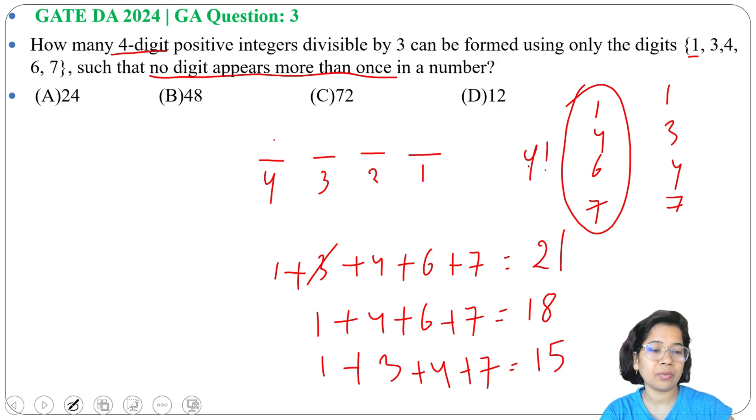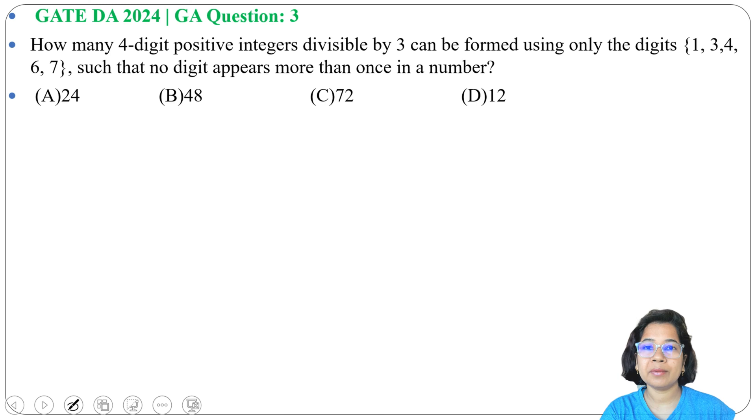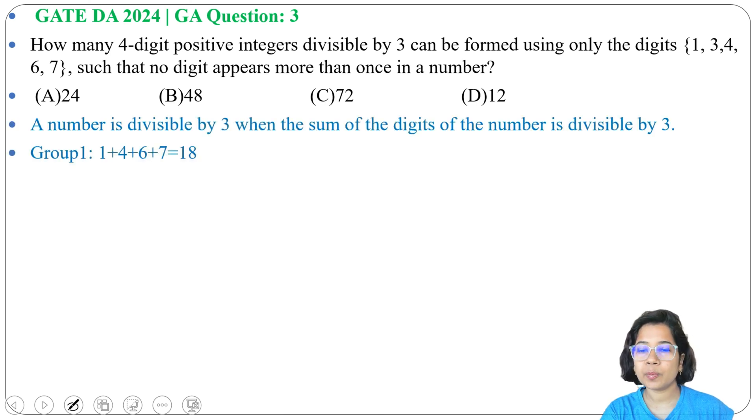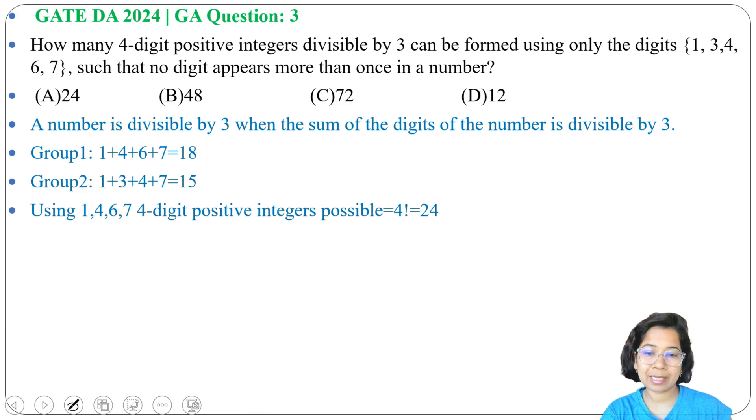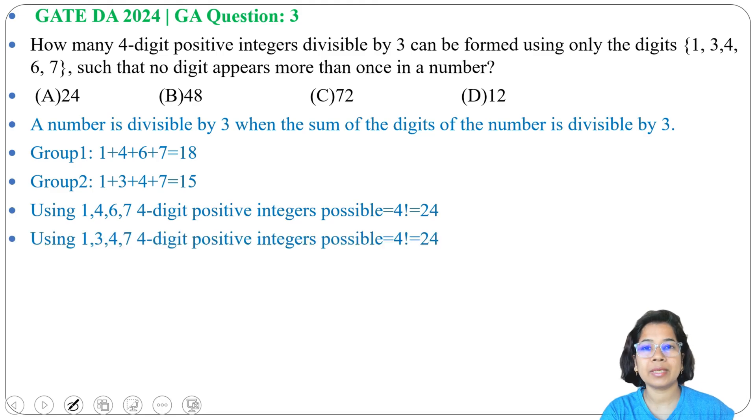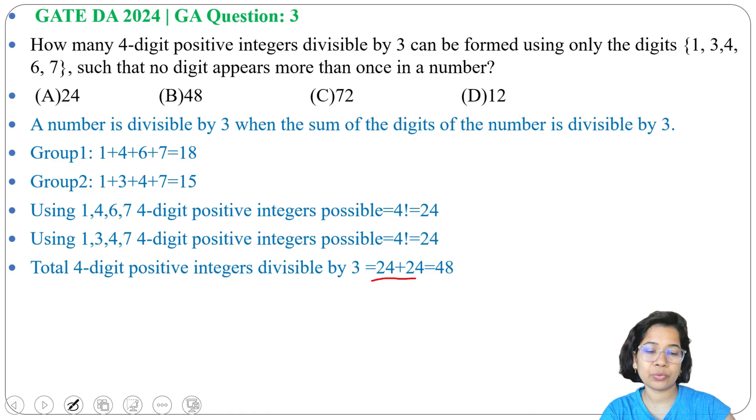By using 1, 4, 6, 7, in the same way by using 1, 3, 4, 7, 4 factorial ways. So total will be 4 factorial plus 4 factorial. A number is divisible by 3 if their individual digit sum is divisible by 3. There can be 2 groups possible: one is 1, 4, 6, 7, another is 1, 3, 4, 7. Using 1, 4, 6, 7, 4-digit positive numbers possible equals 4 factorial, and using 1, 3, 4, 7, 4-digit positive integers possible equals 4 factorial, that is 24. So total 4-digit positive integers divisible by 3 equals 24 plus 24, which is 48, and 48 is present in option B.